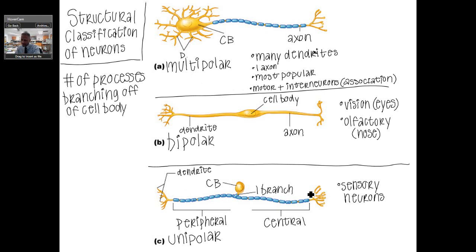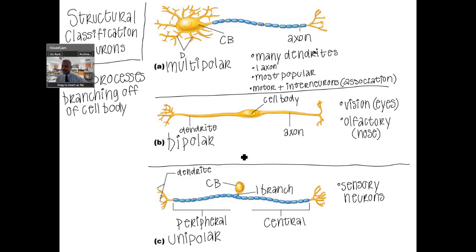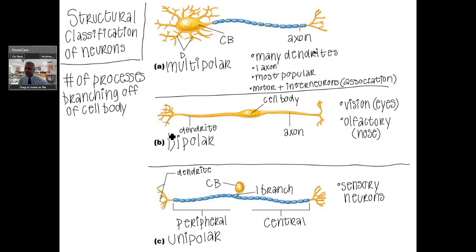The unipolar neuron is going to be your sensory neuron, as labeled here. It has its dendrites in the peripheral nervous system, and the branching and axon go into the central nervous system — connecting with the spinal cord or the brain. We'll talk about tracts related to this.